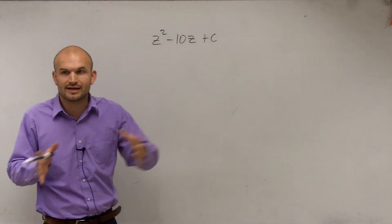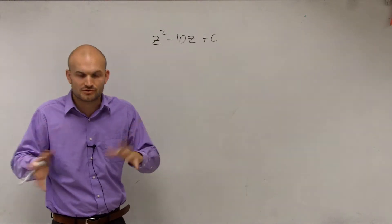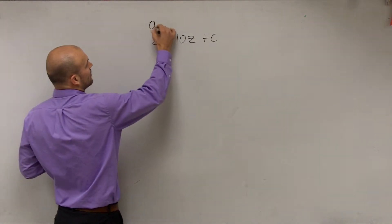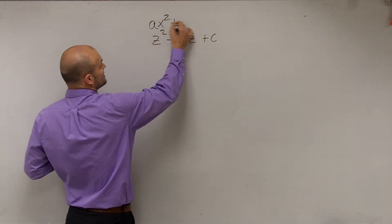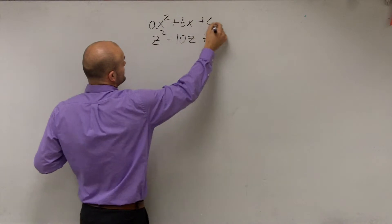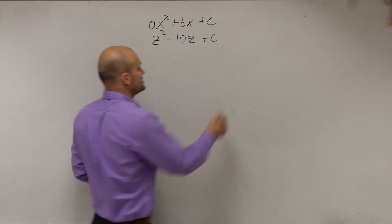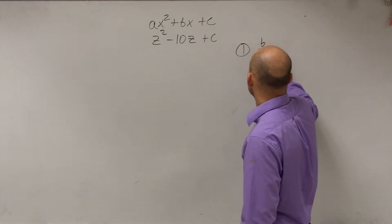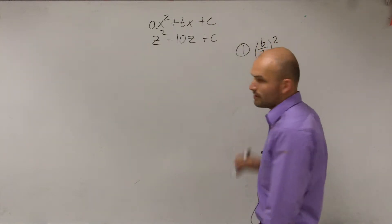Now remember, a perfect square is we can rewrite it as a binomial squared, which we'll get more into later. For right now, all I want you guys to do is to remember that all quadratics can be written in the form of ax squared plus bx plus c. And all we're going to do for these problems for step one is you're just going to do b divided by 2 and square it.